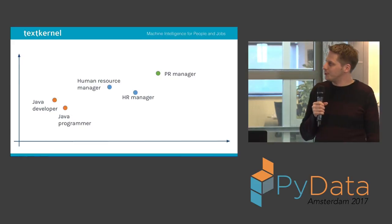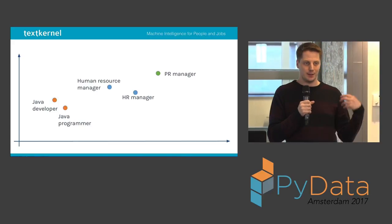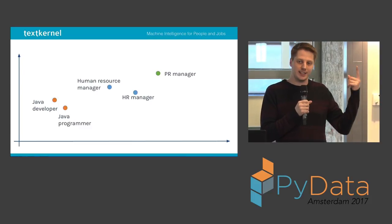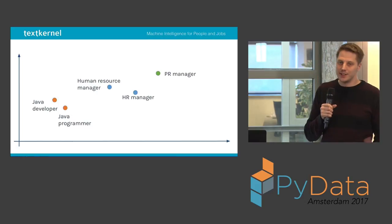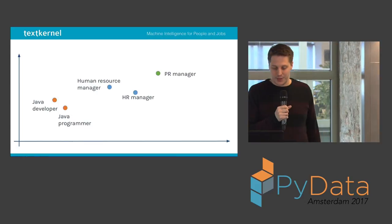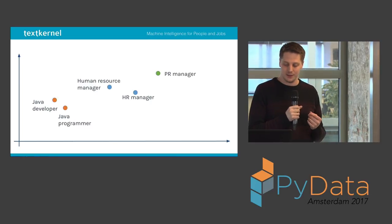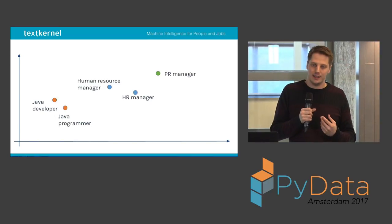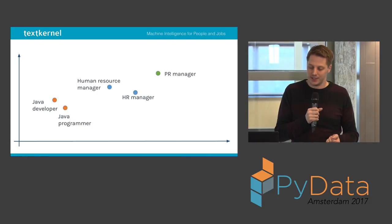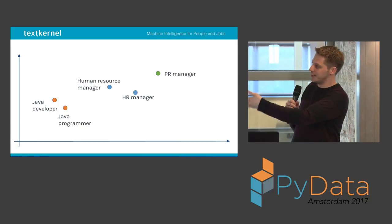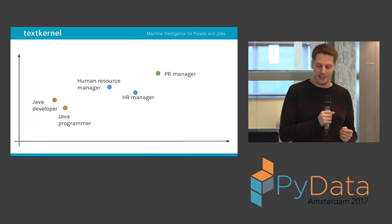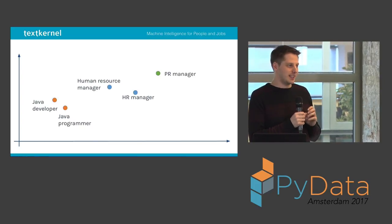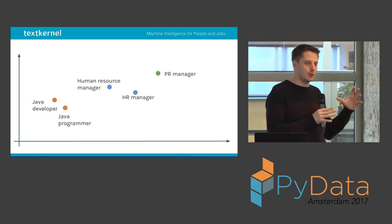We basically want to learn a space in which the distance between job titles is large if they are from different professions and smaller if from the same profession. For example, PR manager and HR manager — if you learned string similarity, those would be very close together because they're almost the same string, one letter difference. But in reality, they're very different jobs. We have a baseline system based on string similarity with a lot of hacks to deal with this kind of issue. What we want to do now is learn a vector representation of these job titles such that the space is well-behaved and job titles group together nicely.